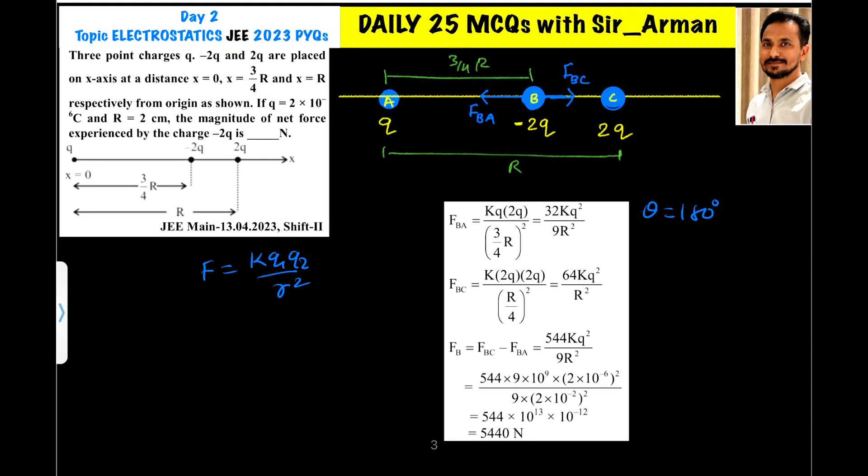Three point charges q, -2q, and 2q are placed on the axis at distance x = 0, x = 3/4 r, and x = r. So here you can see, this is charge q, this is charge -2q, and 2q. The same arrangement I have done here, now from origin here q.